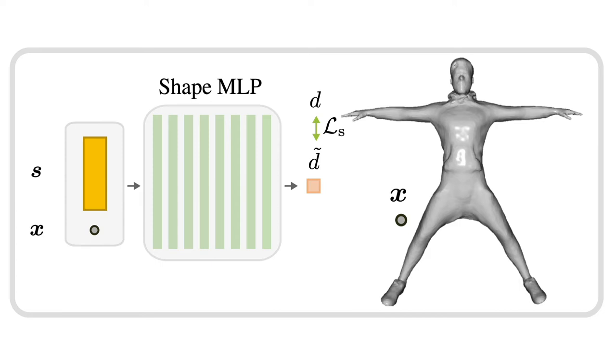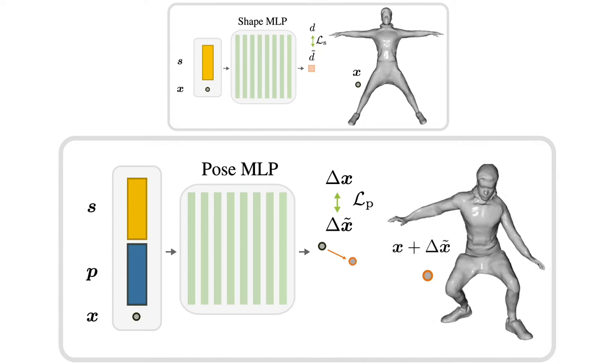The latent pose space is conditional on both the identity's shape code and a pose code P, and learns a mapping from points around identities in their canonical pose to the corresponding point locations in the deformed pose.